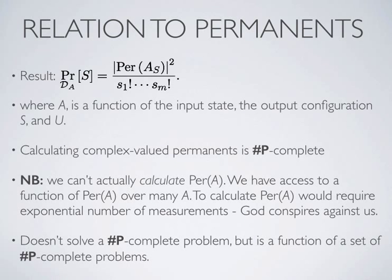Now I'd like to talk about the relationship between boson sampling and matrix permanents, because this gets to the crux of why boson sampling is computationally hard. One of the key results is that the probability of measuring a given configuration is proportional to the absolute square of the permanent of a matrix, where the matrix is a function of the unitary describing the linear optics network and the output configuration. It was shown that calculating complex-valued permanents is #P-complete — a class even higher than NP — so we're pretty sure these amplitudes cannot be efficiently classically simulated.